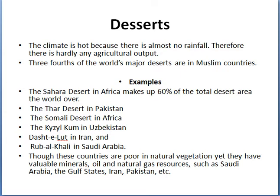Though these countries are poor in natural vegetation, they have valuable minerals like oil and natural gas. For example, Saudi Arabia, the Gulf states, Iran, and Pakistan — we all know that these countries are quite rich in oil and gas. This concludes the desert region and the countries which fall in it.